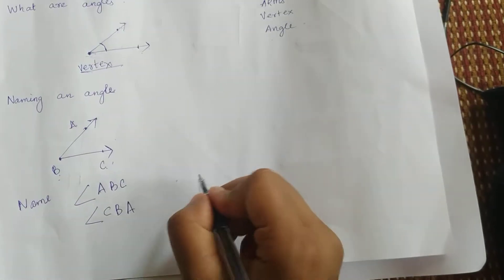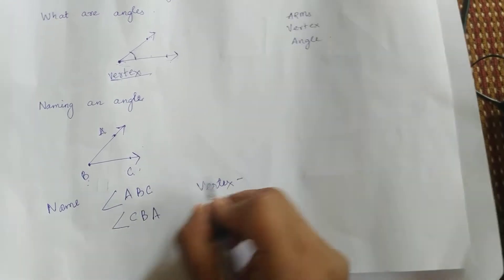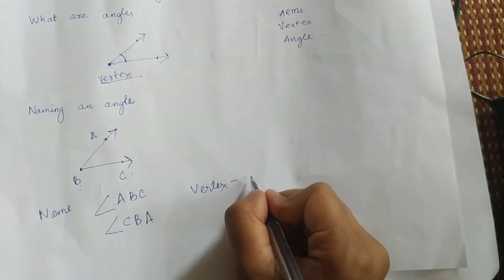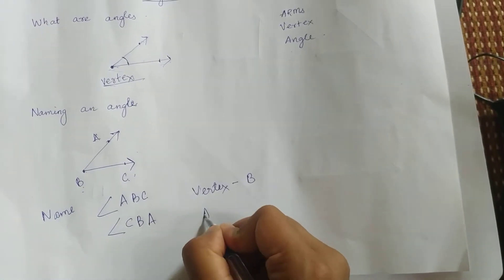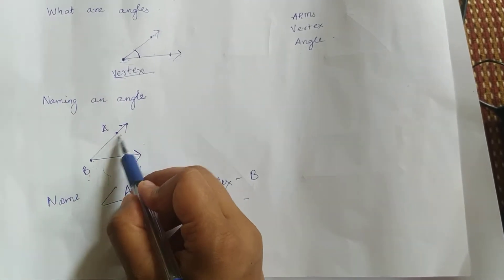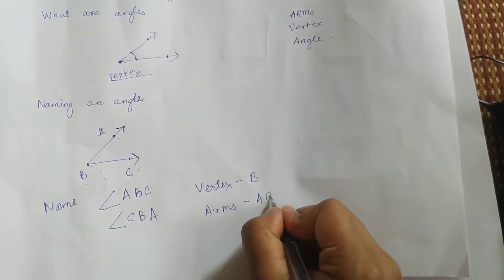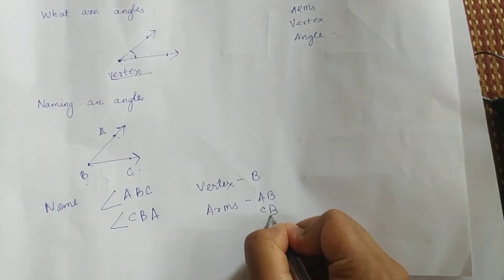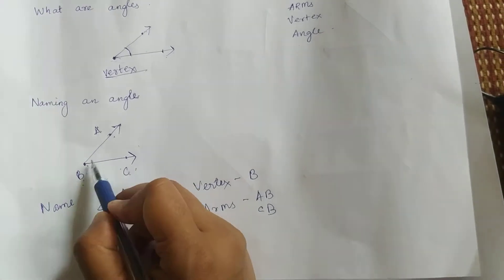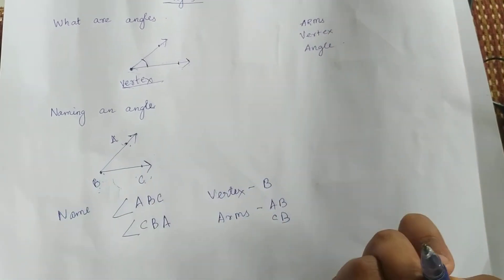Or we can call this angle CBA. This is its name. If we want to tell the vertex, what is it? The vertex is the common point, that is B. And what are its arms? Its arms are AB and CB. Remember you can also call this BC or BA. It's the same thing.